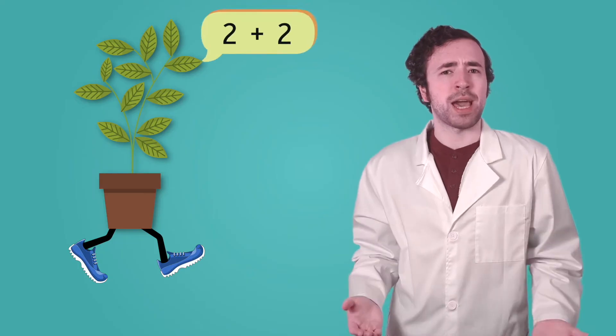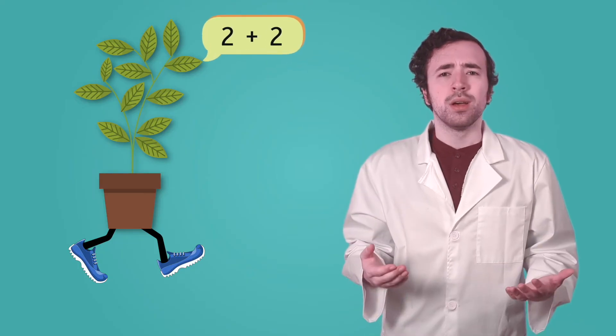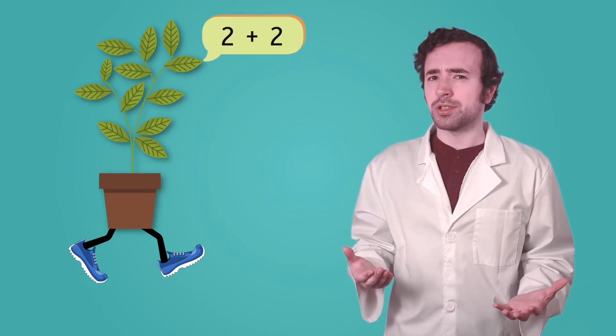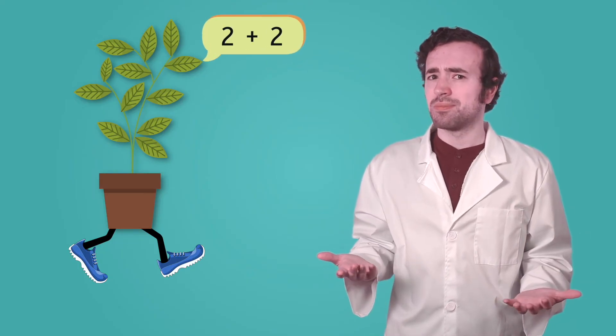But plants aren't out there running marathons or solving math problems, so what do they do with all that energy? Plants use the energy from photosynthesis to grow, get bigger, and undergo even more photosynthesis. But on top of that, a large portion of plants' energy goes towards reproduction.